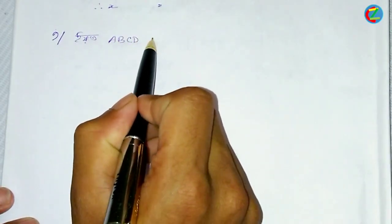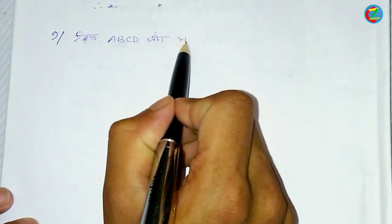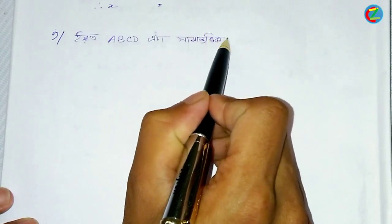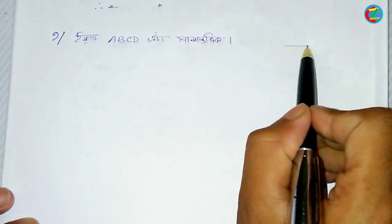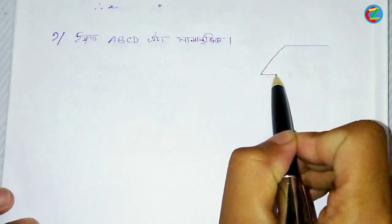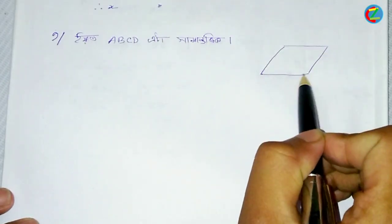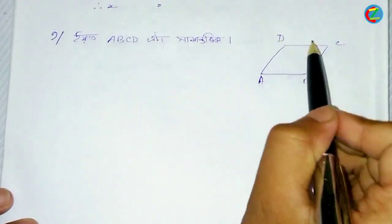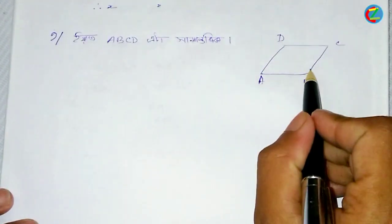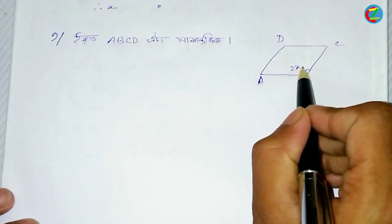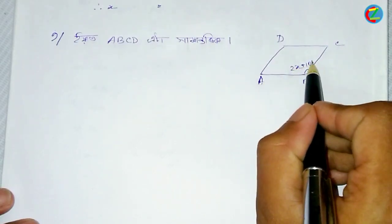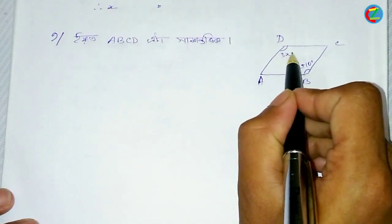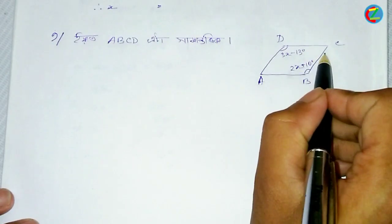ABCD is a trapezium. In a trapezium, if you have the parallel sides, the 2.0 degree is 2.6. The degree is 3.0 degree.